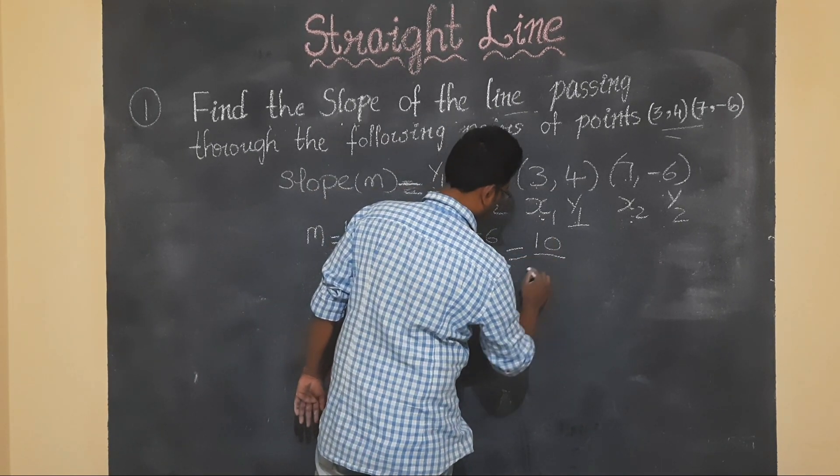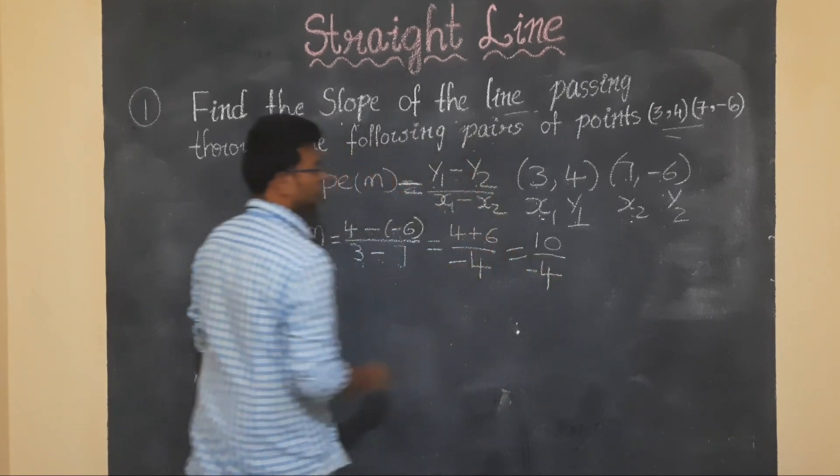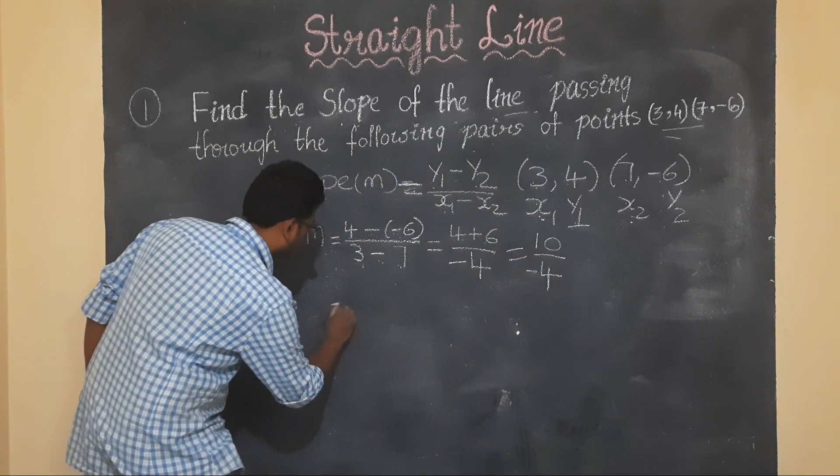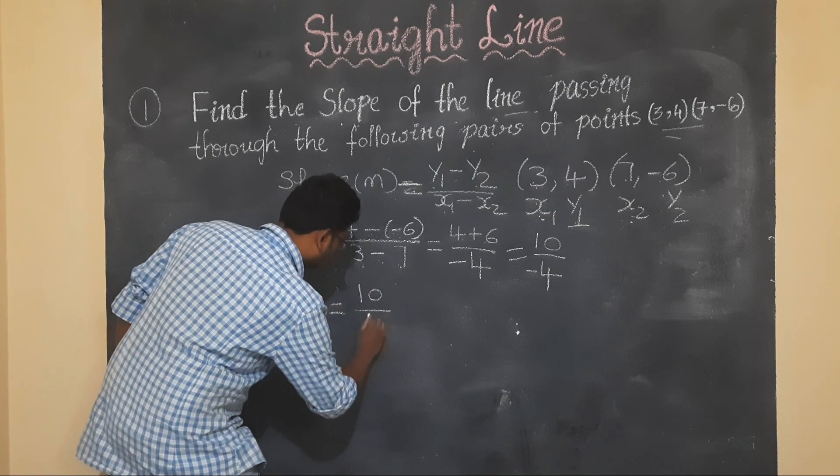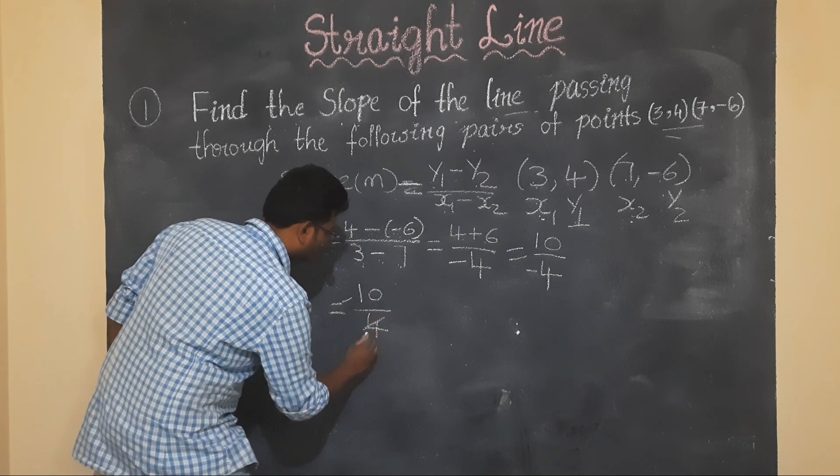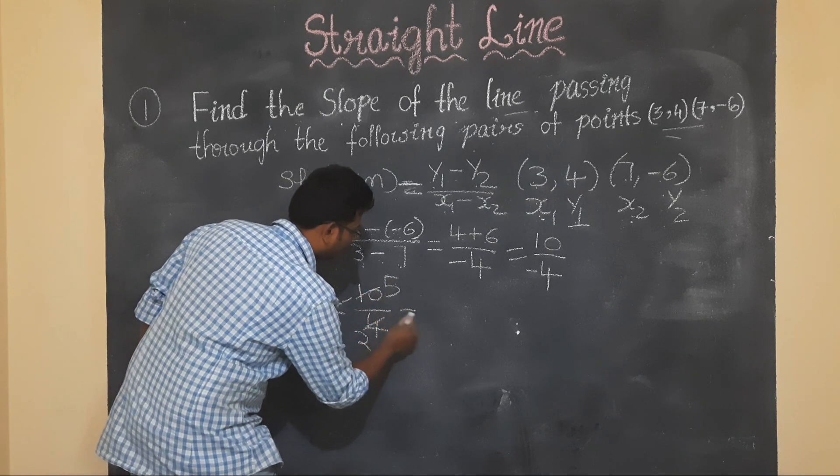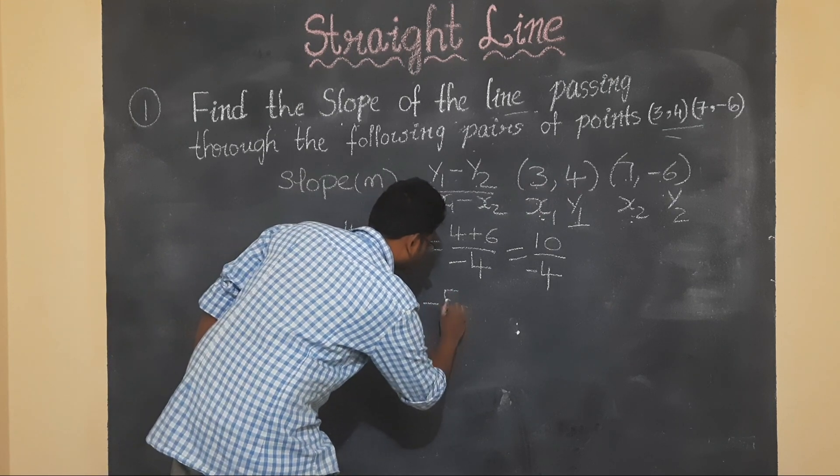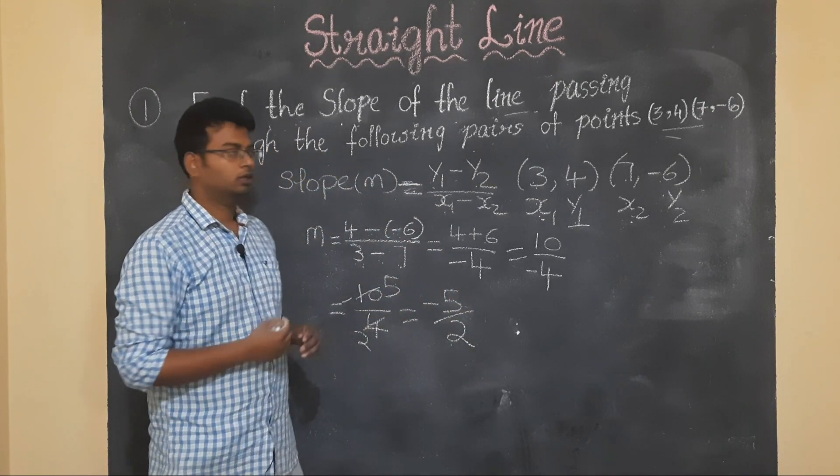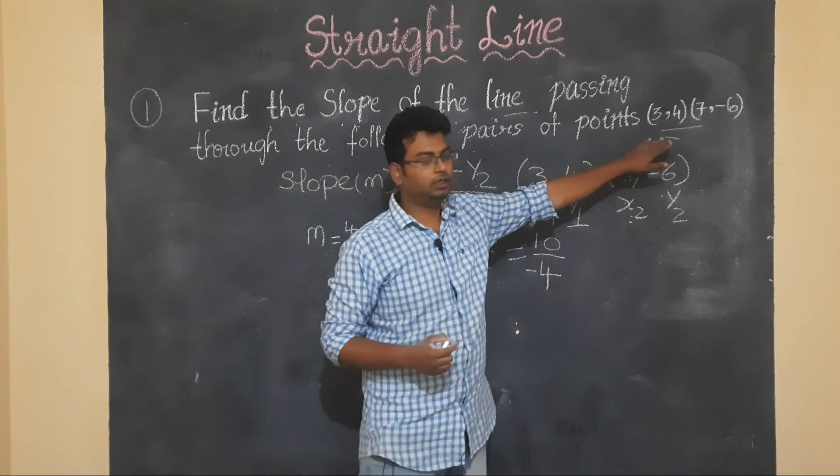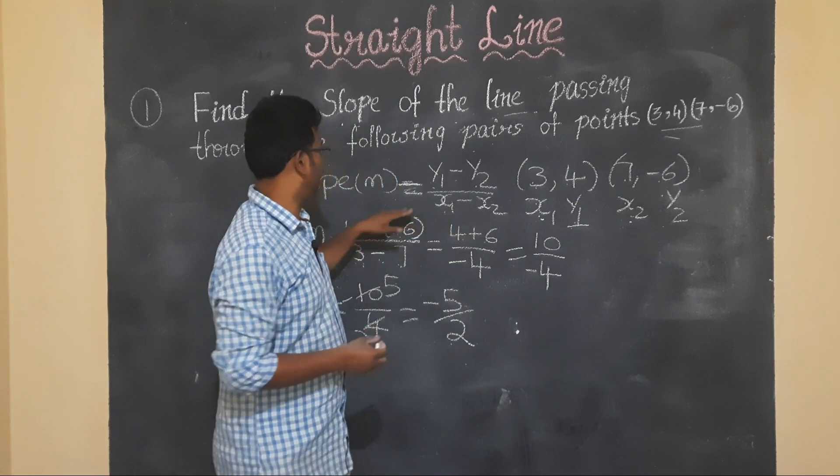So 10 by minus 4, which is minus 5 by 2. Clear students? So when we have two points given, slope can be found using this formula.